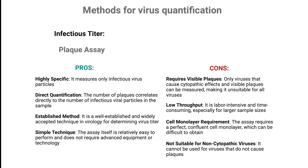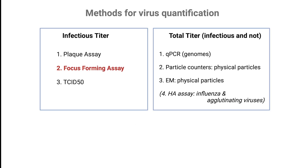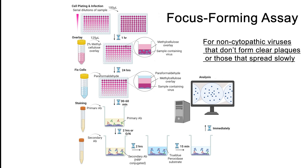The plaque assay is also low throughput and requires a perfect cell monolayer. You can watch our video on the plaque assay for more detailed information. The focus-forming assay is especially useful for non-cytopathic viruses that don't form clear plaques or those that spread slowly, like the dengue virus. Unlike the plaque assay, this method uses immunostaining to detect foci, or clusters of infected cells, making it both faster and more sensitive.